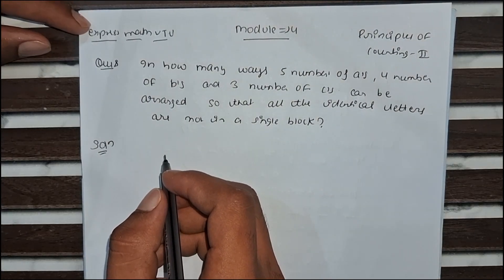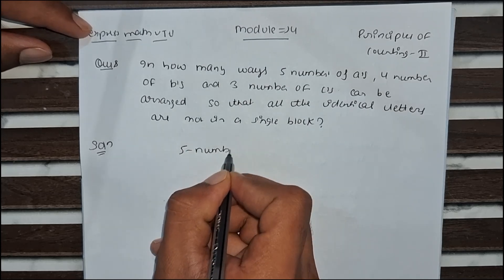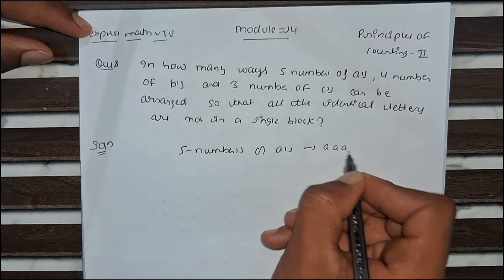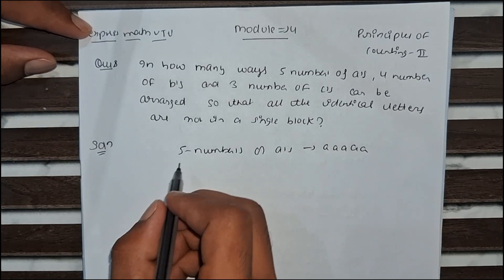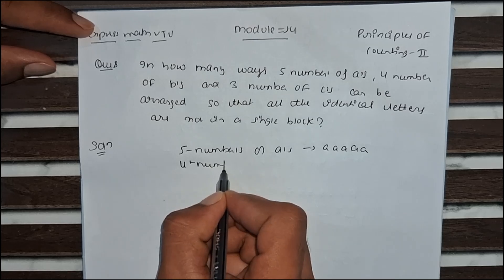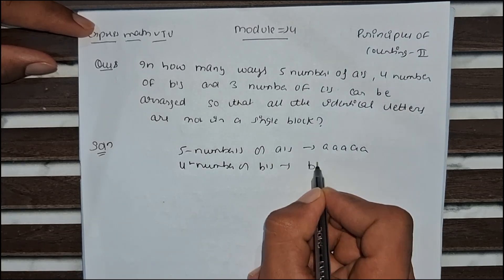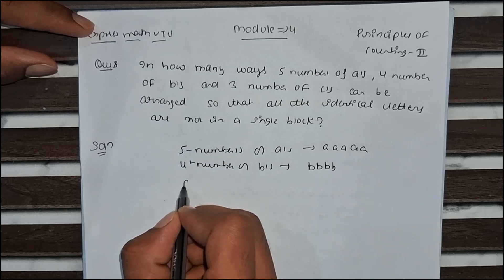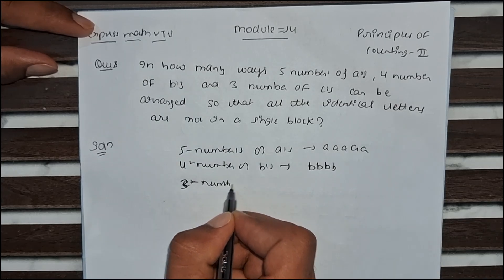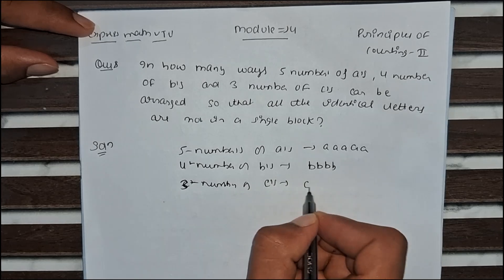First, let's count how many letters there are. There are 5 A's, 4 B's, and 3 C's.